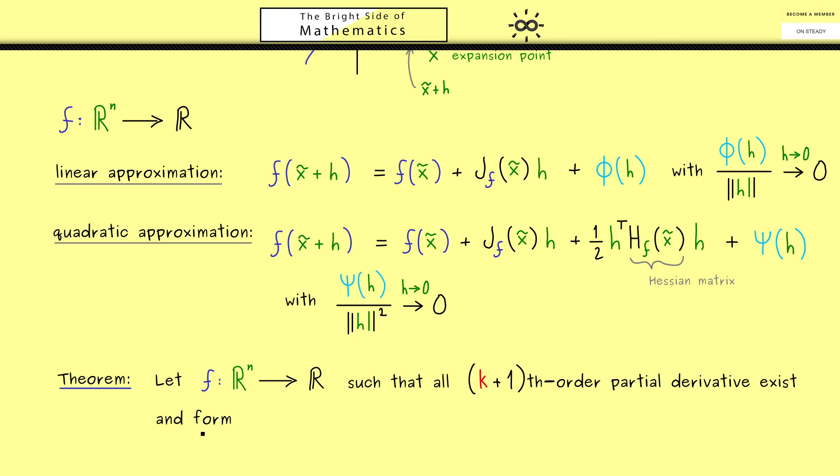Indeed, we want that all partial derivatives of the (k+1)th order exist. And moreover, they should also form continuous functions defined on R^n. There, you might already know, there is a short formulation for this. We would say that f is C^(k+1). So f is an element in the set C^(k+1)(R^n). So you should know this notation from the one dimensional case from real analysis. But you see, we can also use it here in this multi-dimensional case in this sense.